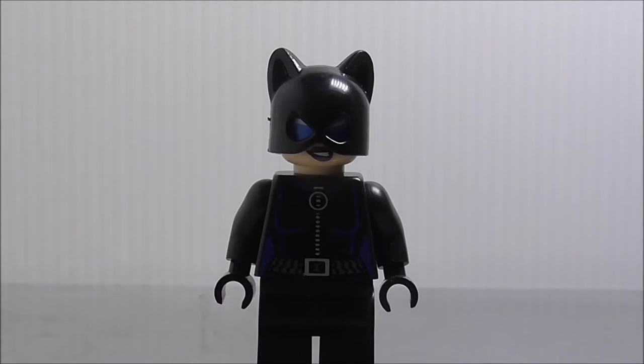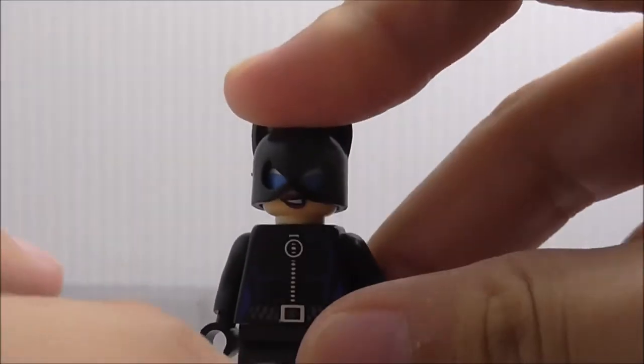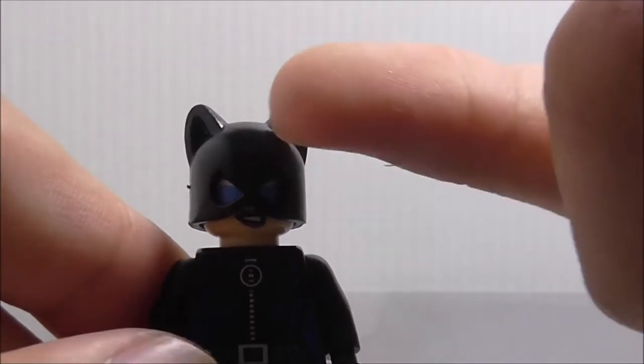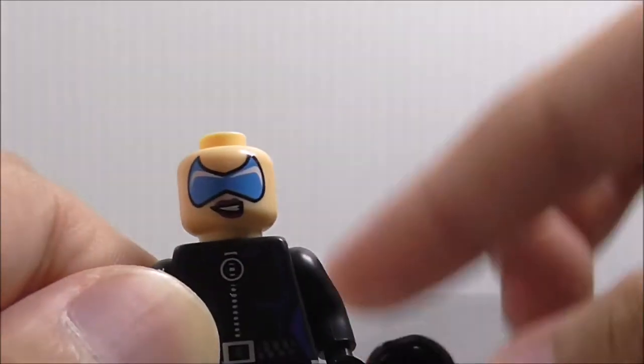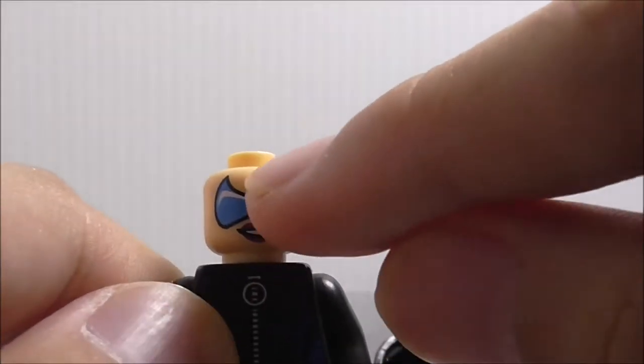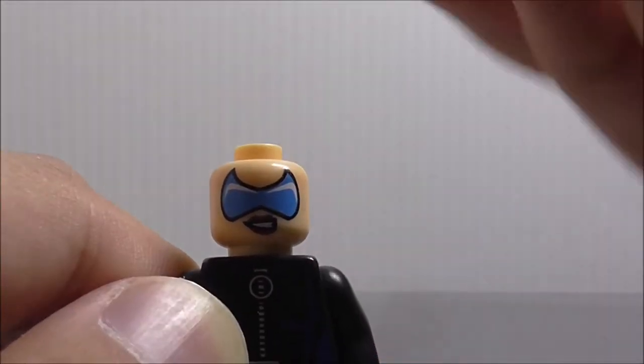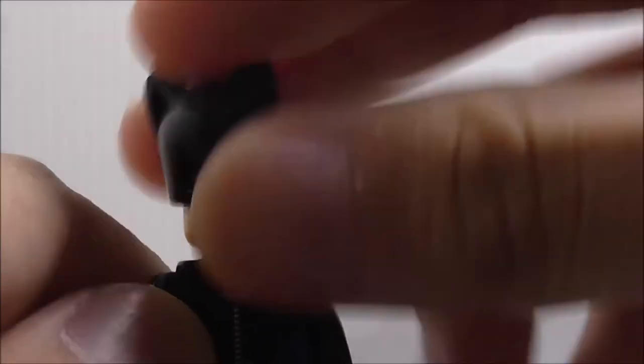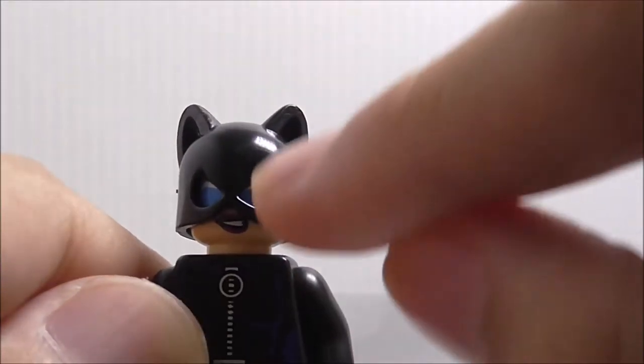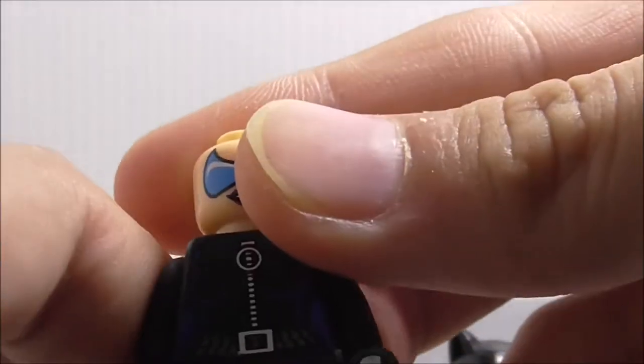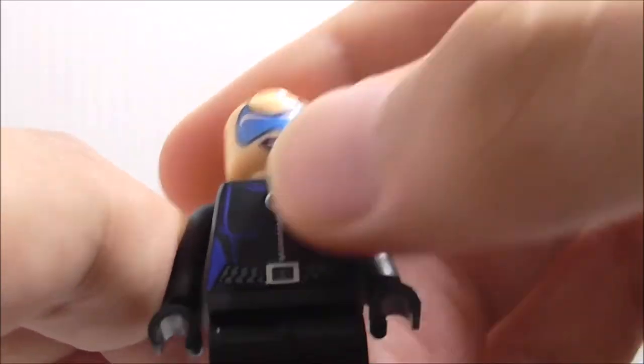This is Catwoman here and I'll show you her accessories later. You can see her mask or helmet here is nicely molded with the cat ears. You can remove it and see her face. You got this blue thing which is the eyes, I guess for night vision and stuff, and also to match up with these holes here. You can see her smirking face. You can see the torso printing - you got the zip in the middle, you got the belts, and some linings.